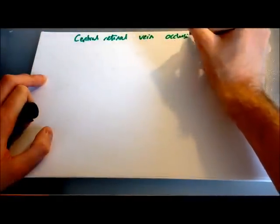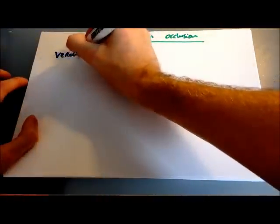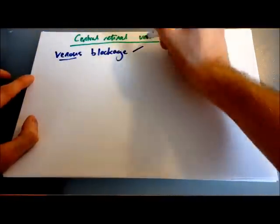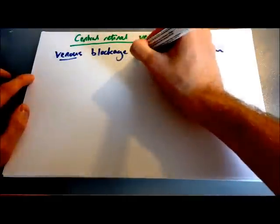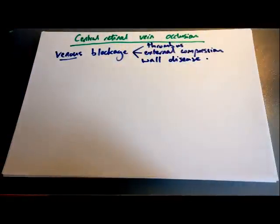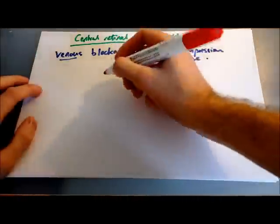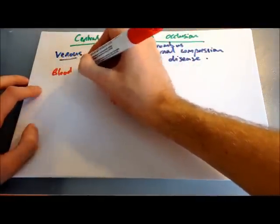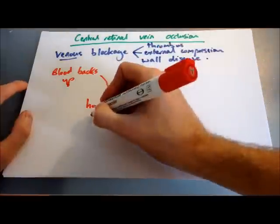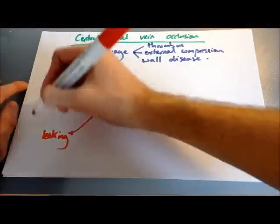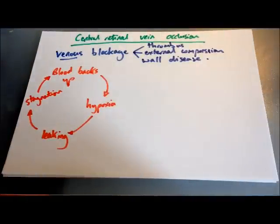Now let's look at central retinal vein occlusion. Retinal vein occlusions are divided into central and branch occlusions, and they usually occur by thrombus formation, though other diseases such as external compression from intraocular pressure or diseases of the vein wall can cause occlusion as well. A blockage in the vein causes backing up of blood, leading to hypoxia, which leads to leaking of blood and its constituents out of the vessel walls. You get further stagnation and worsening hypoxia — a vicious cycle.